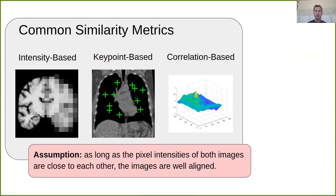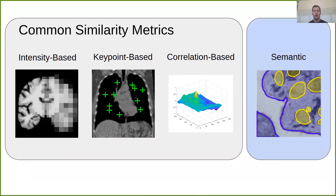And thus, I want to introduce a fourth category here, which is semantic similarity metrics, where we focus on aligning the semantic contents of an image. So instead of aligning individual pixel intensities, we want to align areas that have a similar function in the image or similar meaning.